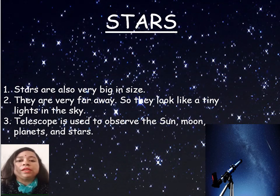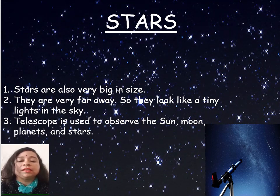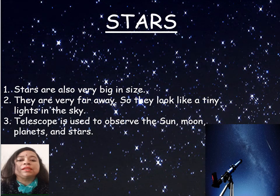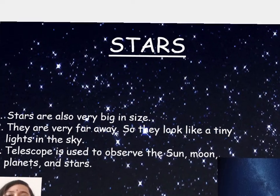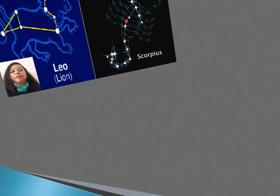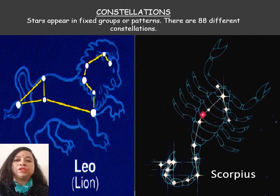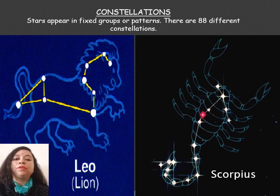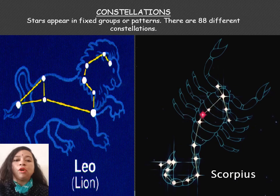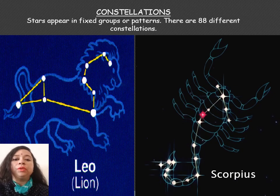The telescope was invented by the scientist named Galileo Galilei. Stars appear in fixed groups or patterns — they are known as constellations. There are 88 different constellations, like Leo, Scorpius, Ursa Major and Orion.